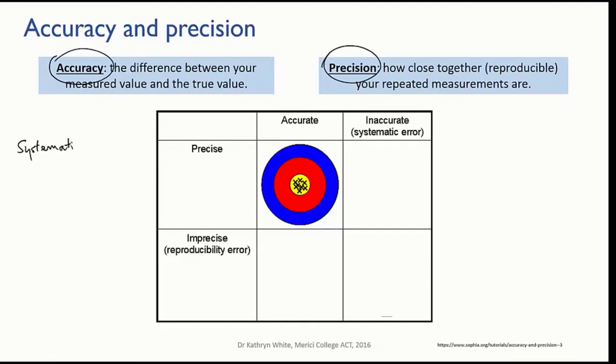Systematic error affects accuracy. Accuracy is the difference between your measured value and the true value.